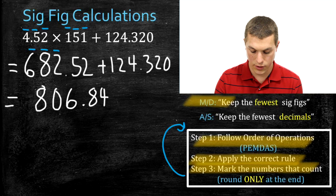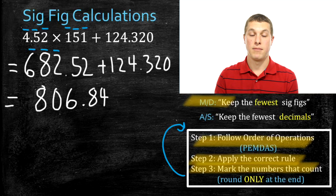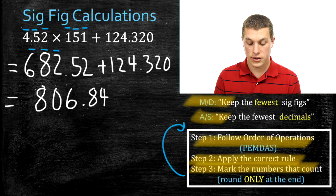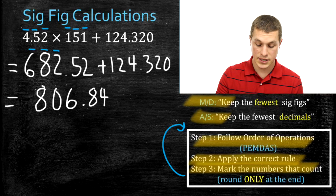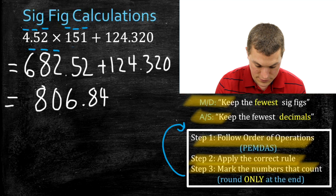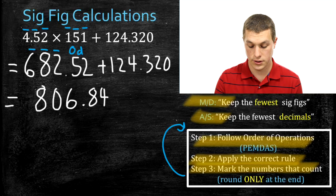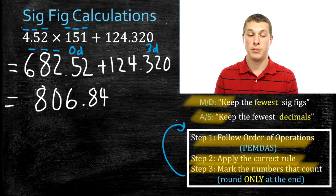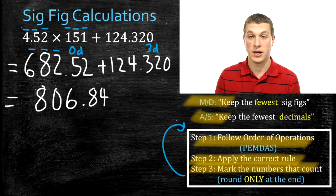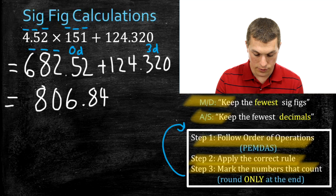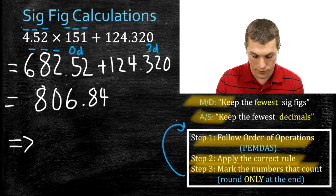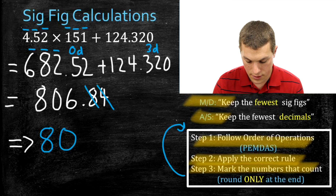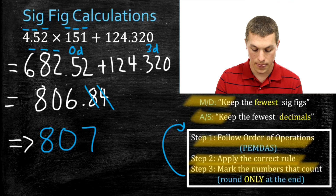If I plug those into my calculator and add them, I get 806.84. Now I apply the correct rule — step two again. In this case I'm adding, so I follow the addition and subtraction rule, which says keep the fewest number of decimals. That 682 has zero decimals, and 124.320 has three decimals. So I keep the fewest, which is zero. I round to get my final answer: 807, because the .8 rounds the six up.